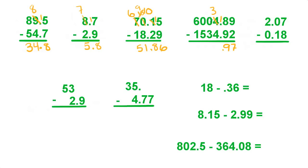3 minus 4 — we have to borrow from way over to the 6. Make that a 5, this is going to be 10. Cross it out and make it a 9, then make that a 10, cross it out, make it a 9, make that 13. 13 minus 4 is 9. 9 minus 3 is 6. 9 minus 5 is 4. And 5 minus 1 is 4. And there's our answer.